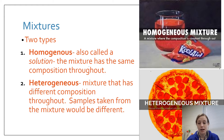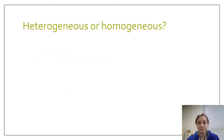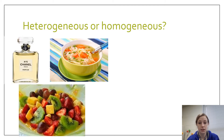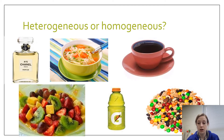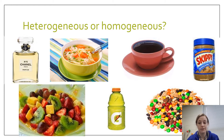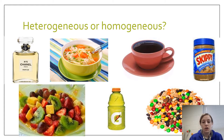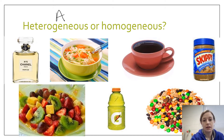Let's look at a few more examples and determine whether they are heterogeneous or homogeneous mixtures. This would be a great opportunity to test yourself, so if you want to pause the video, test yourself, and then I'll go over the answers. Heterogeneous mixtures are going to be labeled A, and homogeneous mixtures are going to be labeled B.